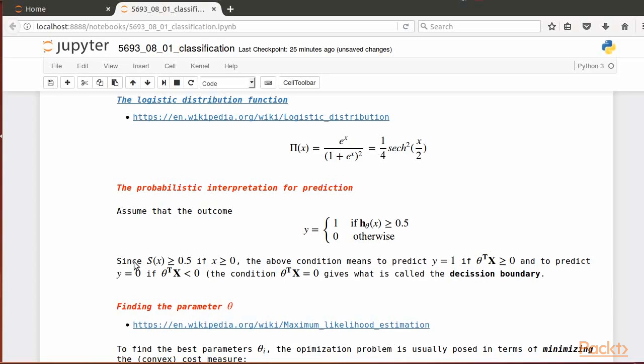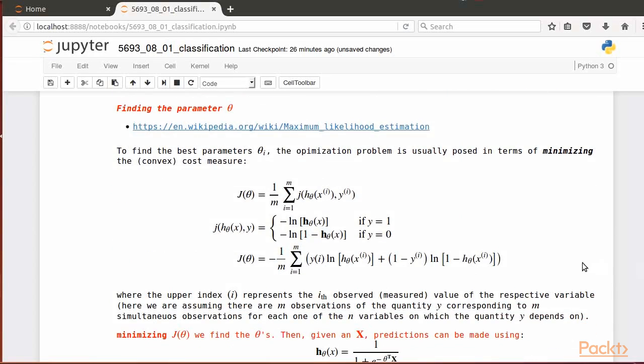This interpretation sets the basis for the logistic regression algorithm. The case when the argument of the hypothesis h of x, or theta transpose times the matrix x, is equal to 0, defines what is called the decision boundary, separating regions of y equals 1 from regions of y equals 0.